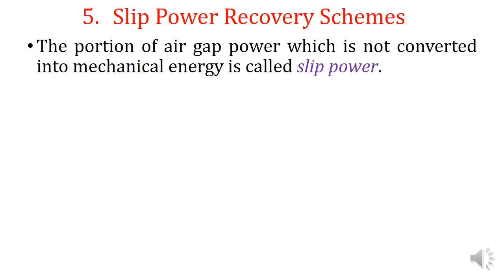In the previous lecture we discussed the rotor resistance control, in which the slip power was wasted in the external rotor resistance. By controlling the amount of power wasted in the external resistance, we were controlling the speed of the induction motor. Instead of wasting the slip power in the external resistance, here we are going to feed the slip power back to the source.